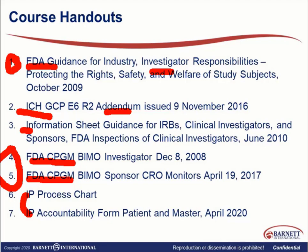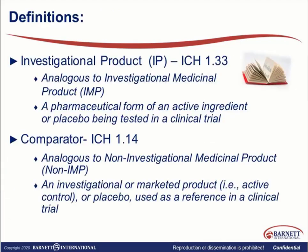I believe all of these documents I've given you are worth reading. I do not provide information that's merely nice to have — it really enhances team learning, and you could probably read this in an afternoon. It's very easy and self-explanatory reading. With that, let's jump into an introduction — just looking at what an investigational product is. Referencing ICH: an investigational product is analogous to an investigational medicinal product. It's a pharmaceutical form of an active ingredient or a placebo being tested in a clinical trial. ICH does not refer to devices — it was created for drug — but in the device world we also refer to it because it has very good recommendations.